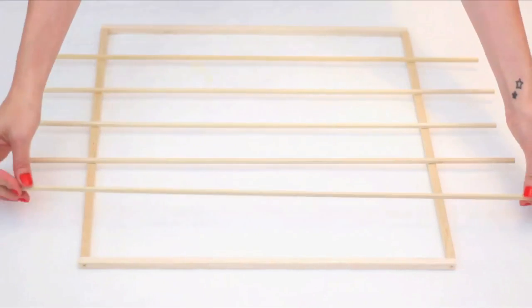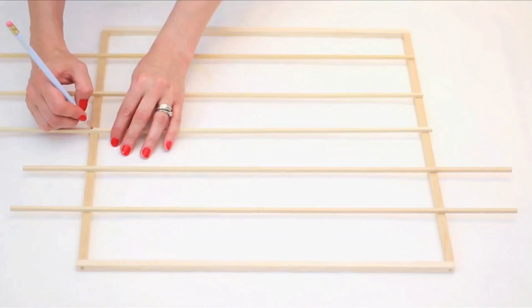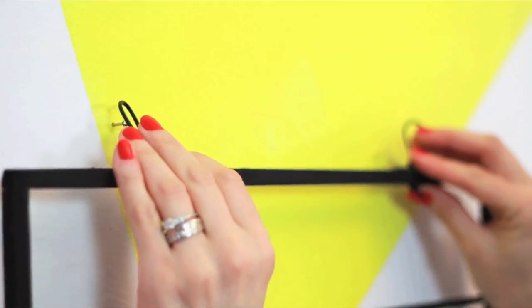Equally divide your square with five smaller dowels. Affix with wood glue. Paint or leave it plain, and add two hangers.